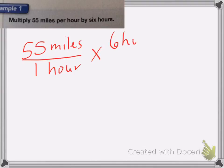So the problem is 55 miles per 1 hour, we're going to multiply that by 6 hours, and I'm going to put that over 1 to make it a fraction. Before I even multiply these out,